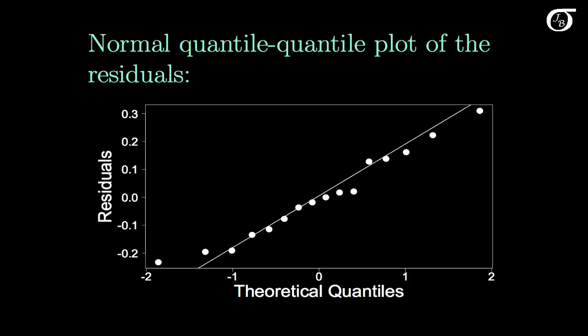Here's a normal quantile quantile plot of those residuals. If you recall, if the residuals are approximately normally distributed, then the normal quantile quantile plot of those residuals will result in an approximately straight line.